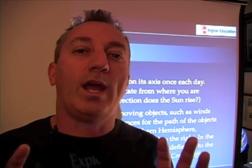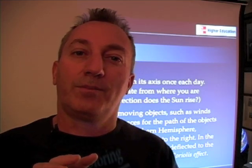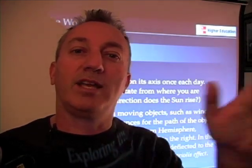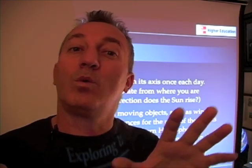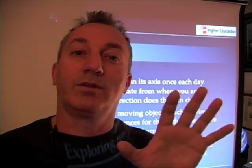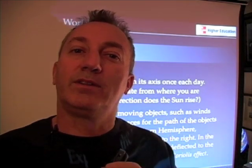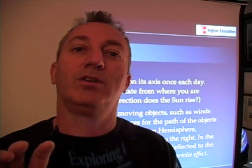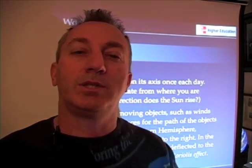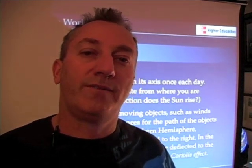The Coriolis Effect, in its simplest sense, is simply a way of explaining the movement of objects over a rotating Earth. So if you think about flying in an airplane, or clouds moving over the surface of the Earth, or even water moving over the surface of the Earth, the Earth is turning underneath them. And the Coriolis Effect is simply a way to account for the rotation of the Earth beneath those moving objects.